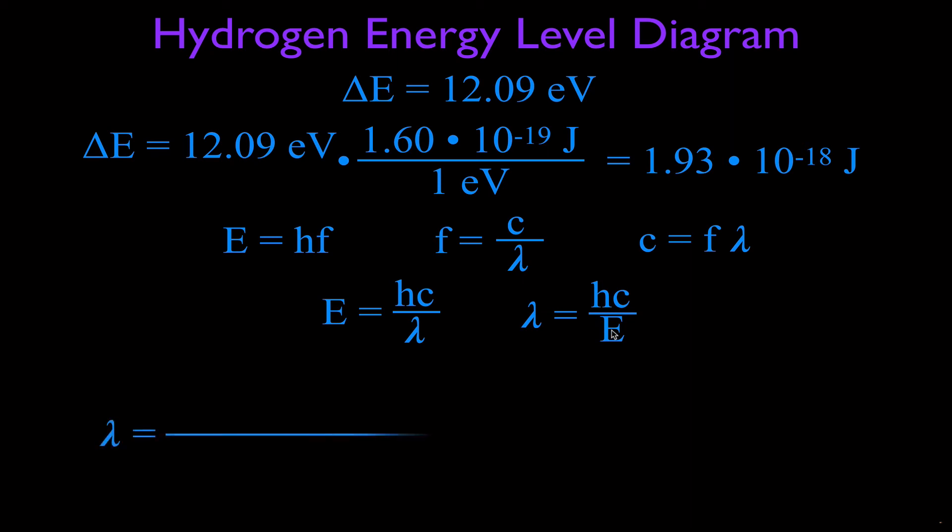And after that, we simply just plug the values in. The wavelength is going to be equal to Planck's constant, which is 6.63 times 10 to the minus 34 joule seconds, multiplied by the speed of light, 3.00 times 10 to the eighth meters per second. We divide that by the energy we got, and that's 1.93 times 10 to the minus 18 joules.